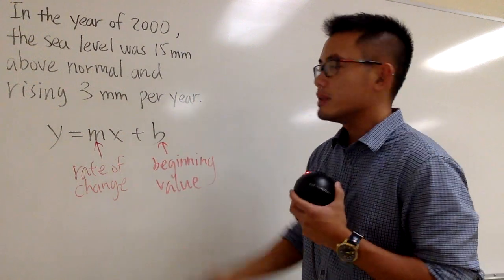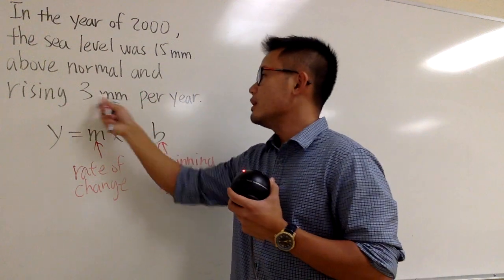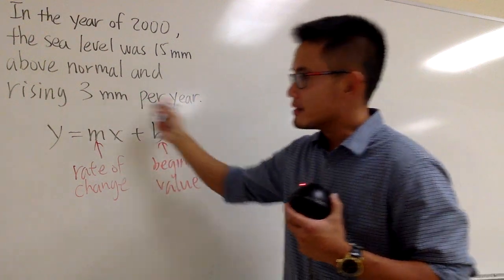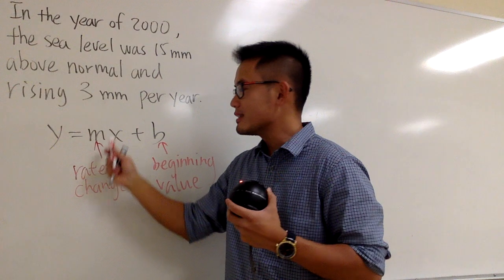So as you can see from the question, this 3 millimeters per year, this right here, it's the rate. So that's the m.